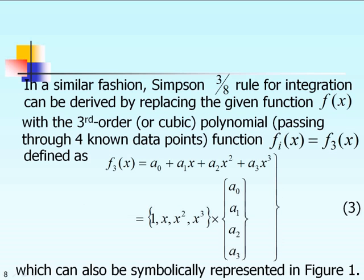However, in this chapter we are interested in using the Simpson 3/8 rule for integration. To derive it, the procedure and main idea are the same — the only difference is that we replace the complicated function f of x by a third-order or cubic polynomial function passing through four data points. So, we approximate f of x by f3 of x, which is expressed as f3(x) = a0 + a1*x + a2*x² + a3*x³.